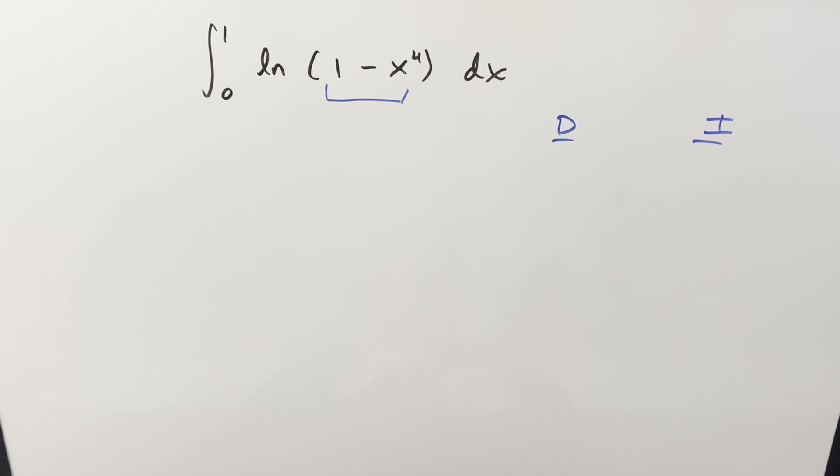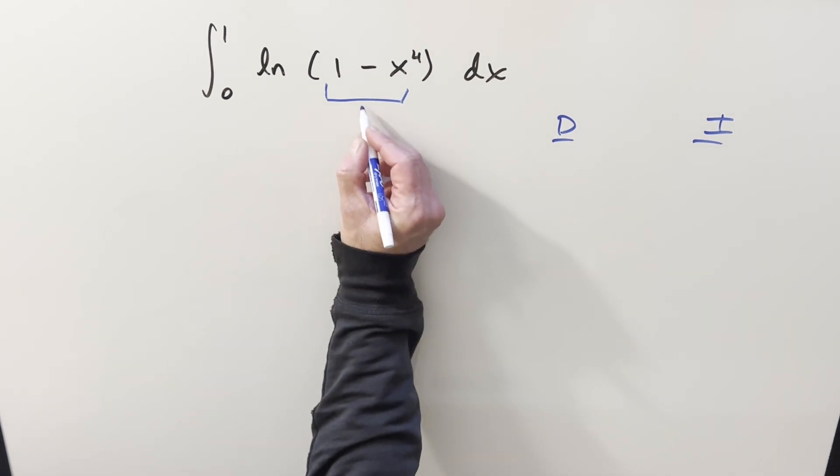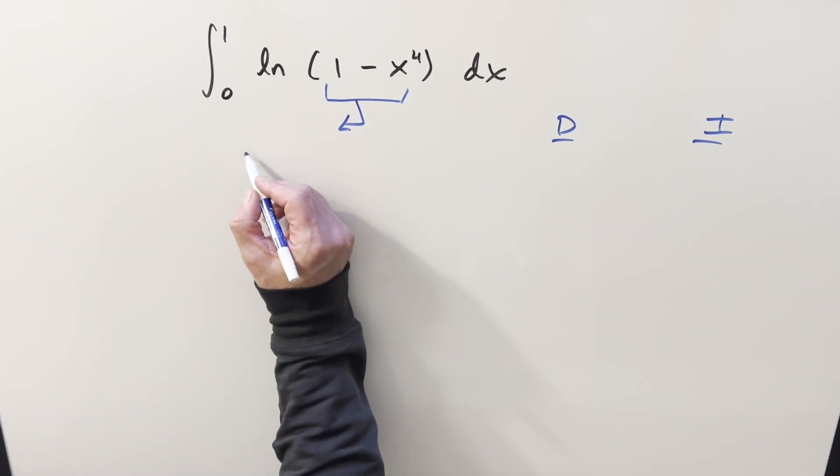I'm just kind of curious if there's some nice way to do this. So before I do integration by parts with the DI method over here, I do want to factor it first.